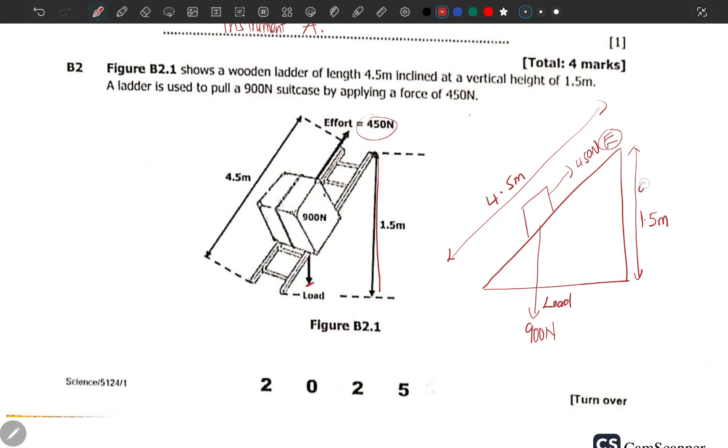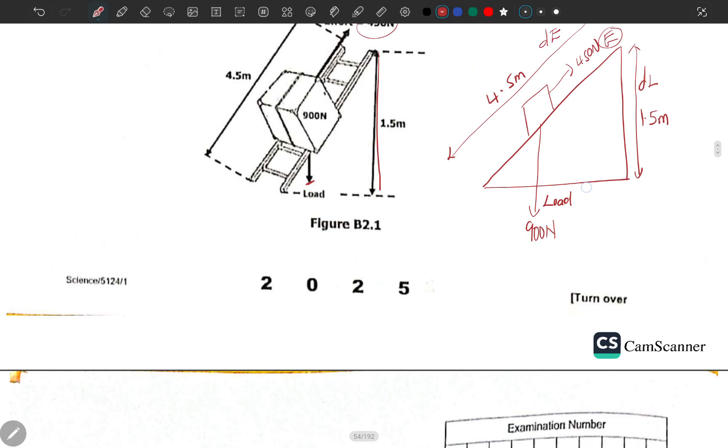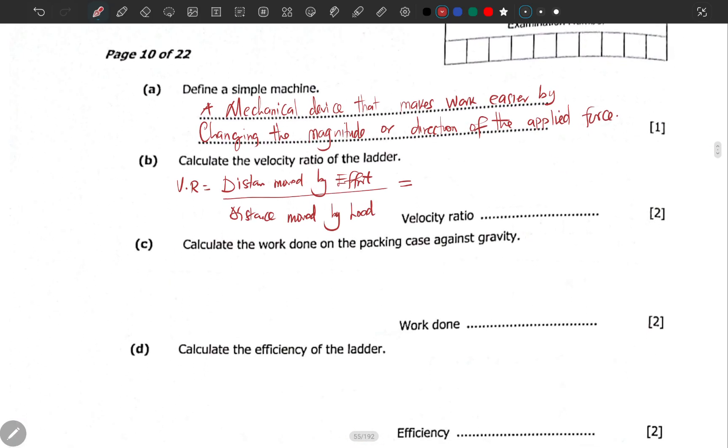This distance here is the distance moved by the load, and this distance we are seeing here is the distance moved by the effort. Meaning we have 4.5 meters over 1.5 meters, which will give us 3. It doesn't have units. Some of you would have put 3 meters and you could have got it wrongly. Velocity ratio has no units.